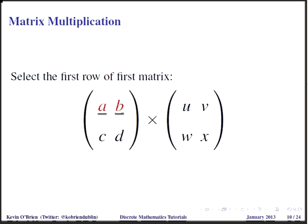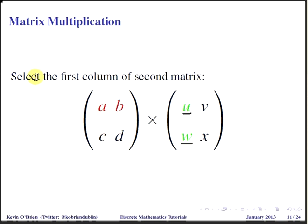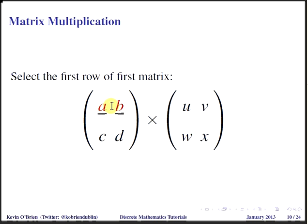Let's commence our multiplication operation. What we're going to do is firstly select the first row of the first matrix. We're selecting the first row of the first matrix, and we're going to select the first column of the second matrix. With matrix multiplication, for the first row of the first matrix we will be using the rows, and for the second matrix we will actually be using the columns. So that's a very important point.